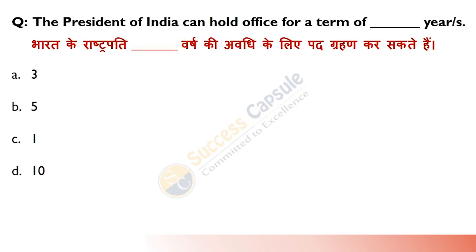The President of India can hold office for a term of how many years? Answer is B — five years. It is a fixed period, but the President has the right to be re-elected.